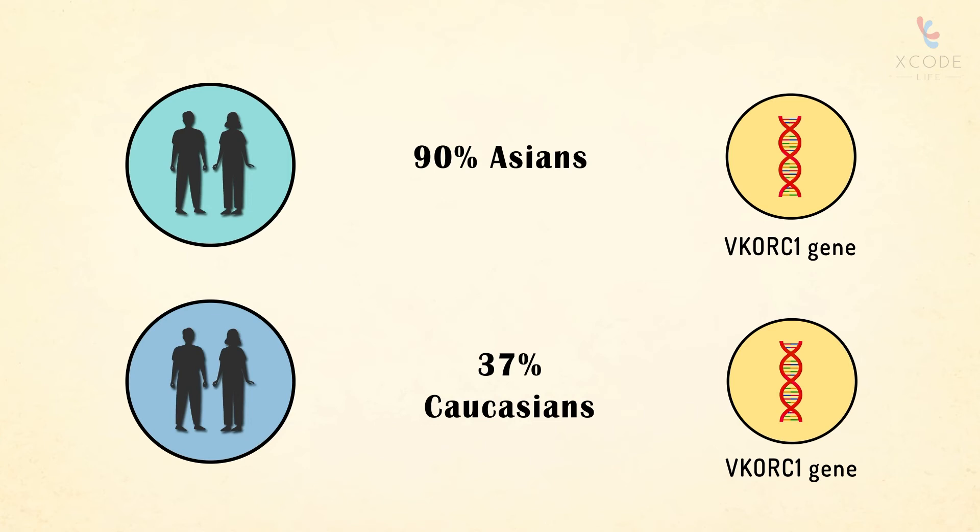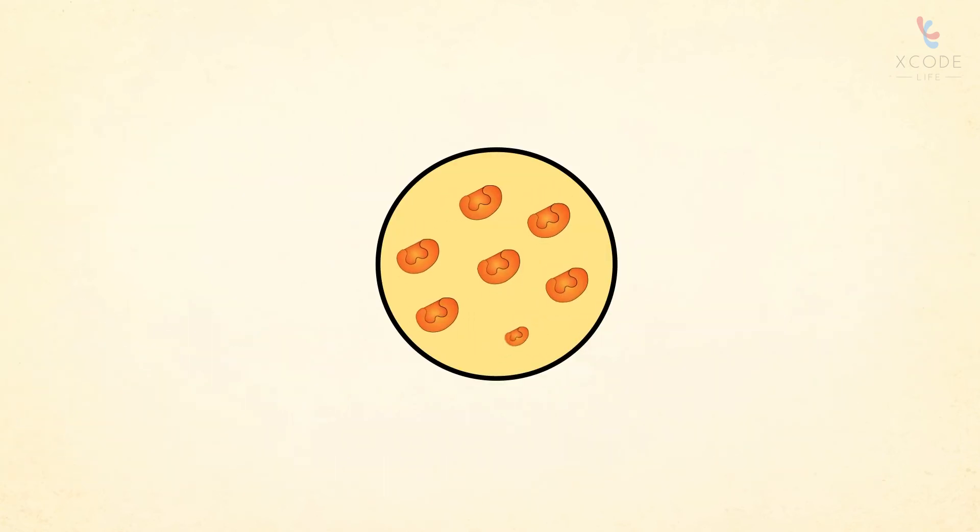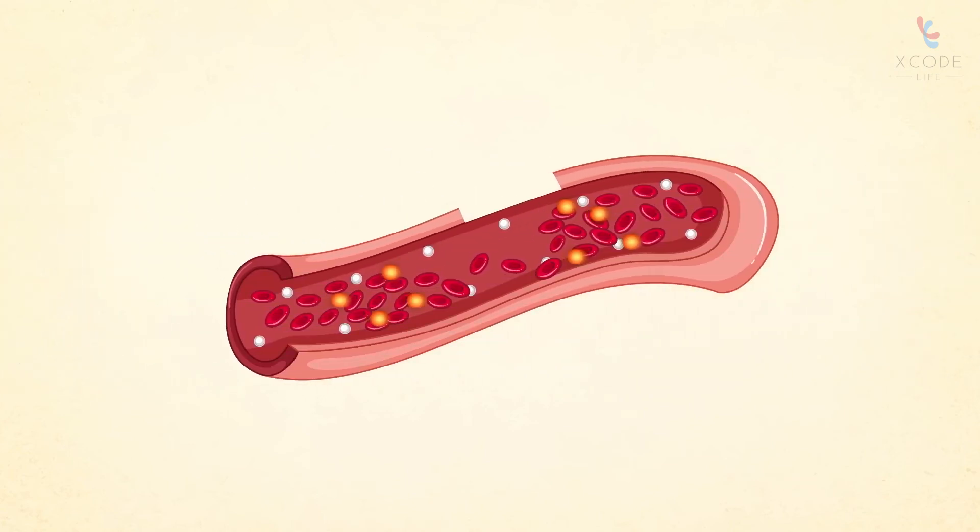About 90 percent of Asians and 37 percent of Caucasians have a change or mutation in the VKORC1 gene, which results in lower levels of the vitamin K reductase enzyme. This can result in lower production of the clotting factors and an increased risk of blood clotting disorders.